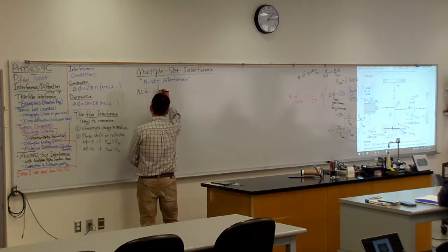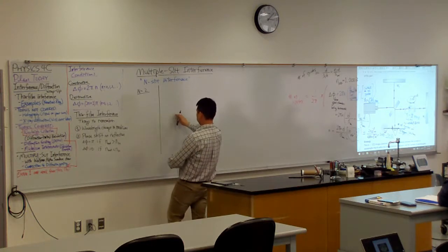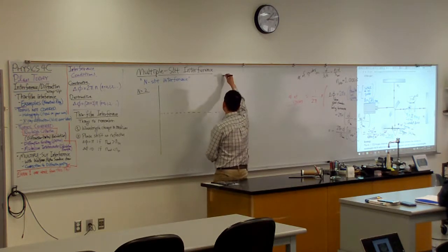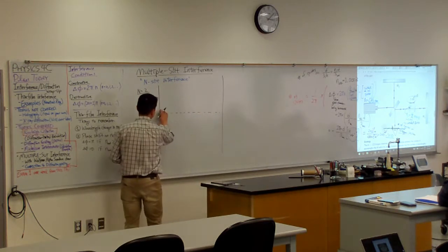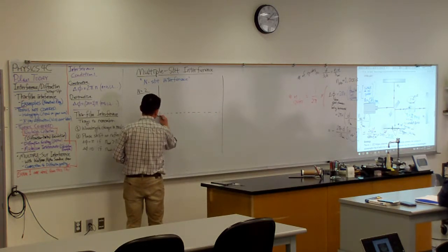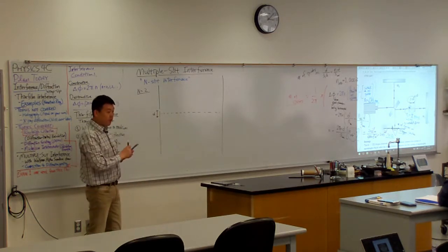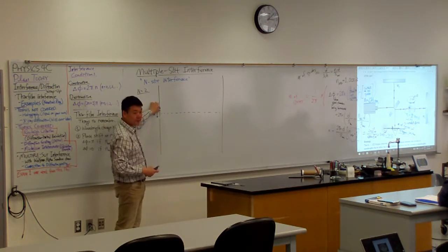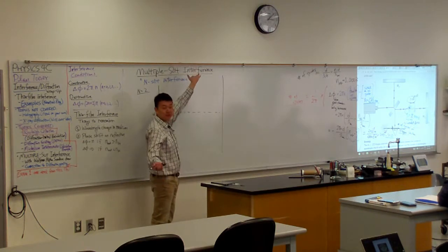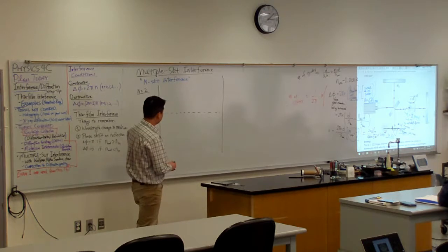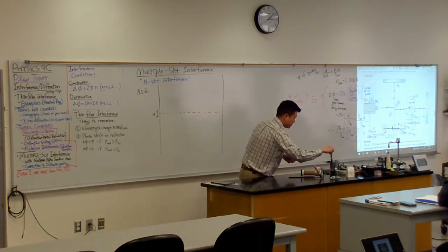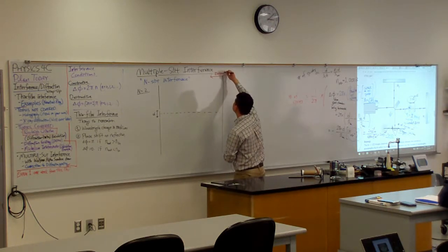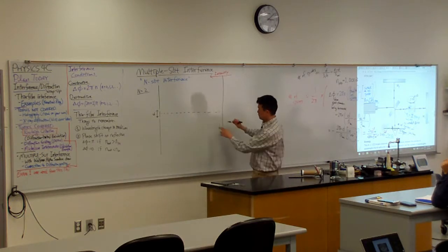Let me draw that picture for double slit that you have seen before. I have a screen some distance away, and these two slits are separated by some distance d. I'm going back to the original picture where these slits are infinitesimally small. So whatever diffraction pattern you get from a single slit, it's super wide — you don't actually see anything you would call a single slit diffraction pattern. The kind of pattern you see looks something like this. I'm plotting the intensity along this axis.